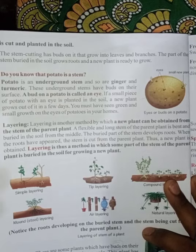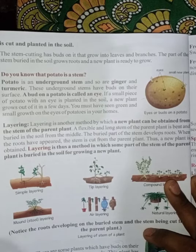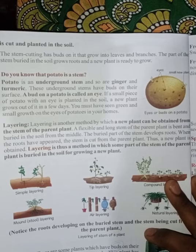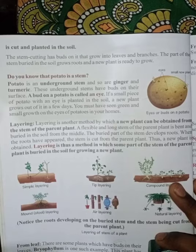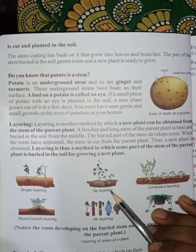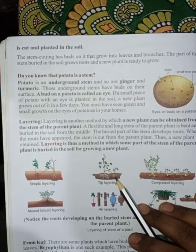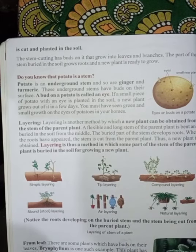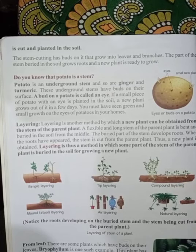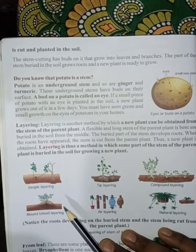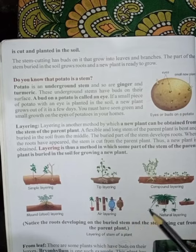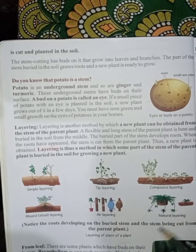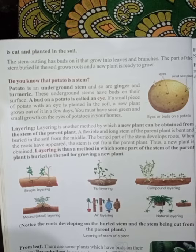Layering. What is layering? We can see in some plants that they are layering — they are making one layer, two layers in the ground. You can see in the picture: simple layer, they are having one layer. Tip layer means they are having a very deep layer and they are spreading their layer. Compound layering — they are having many layers. Mold layering means they are moving towards down, their roots are spreading down more. Air layering. Natural layering.